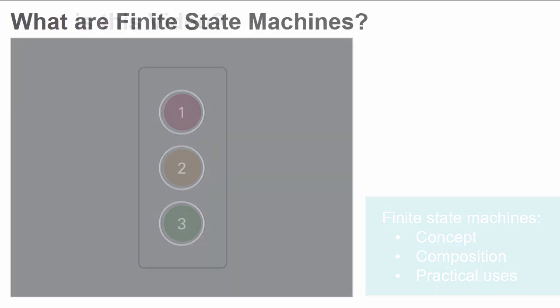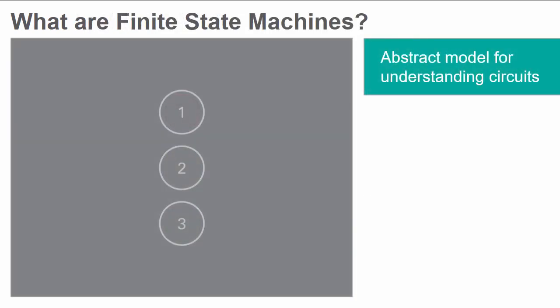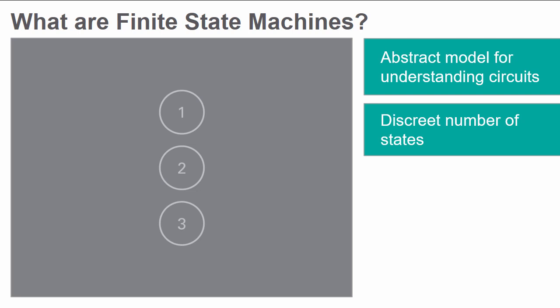A finite state machine is an abstract model used to understand certain types of circuits. In all finite state machines, there are a discrete number of states in which the system can exist.